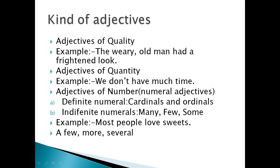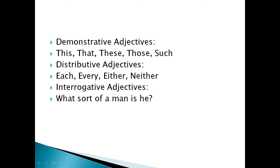Demonstrative adjectives point out which person or thing is referred to — like 'this room,' 'these grapes,' 'those pictures,' 'such questions.' Distributive adjectives include each, every, either, neither. The last type is interrogative adjective — for example, 'What sort of a man is he?' — here 'what' is an interrogative adjective.